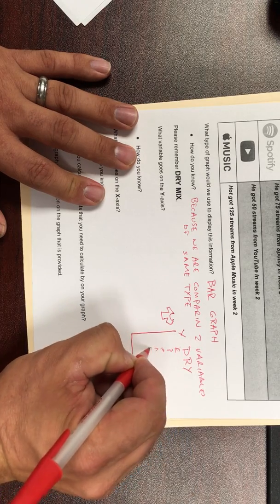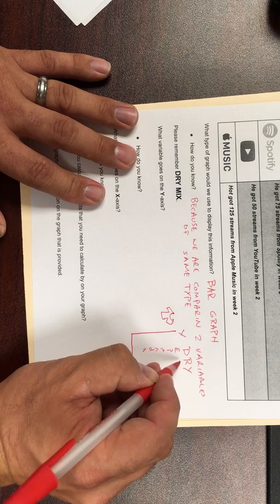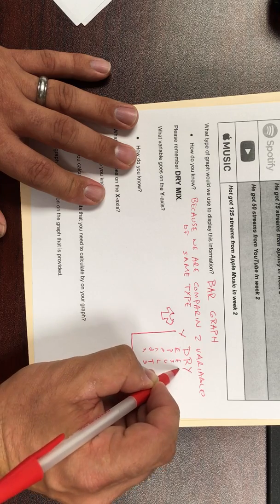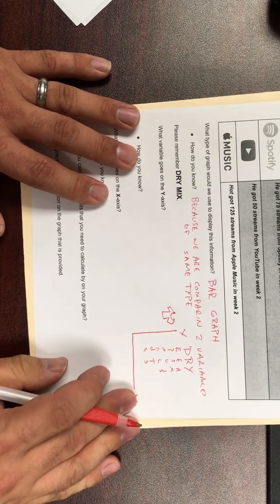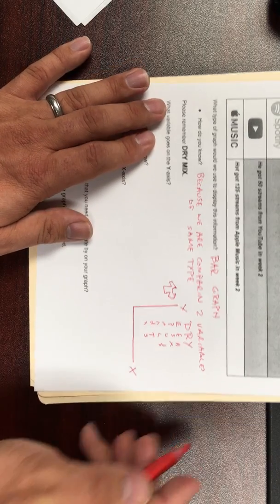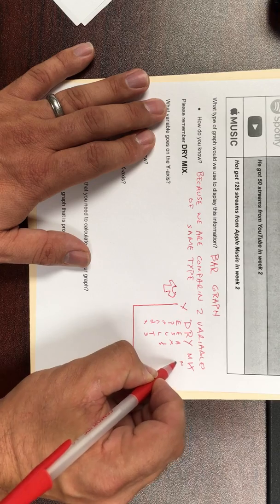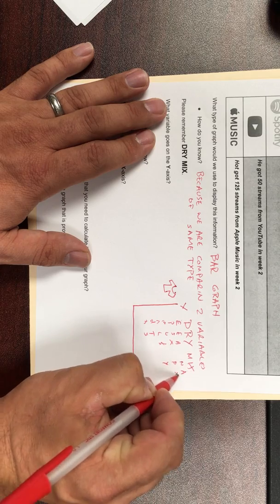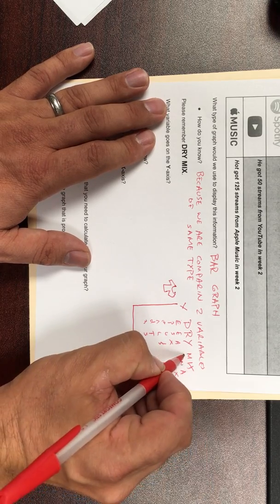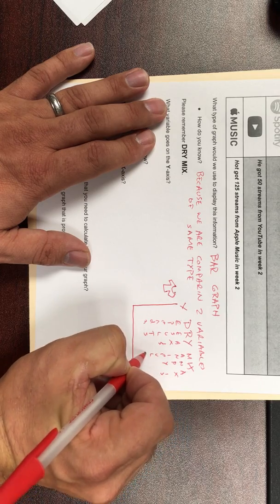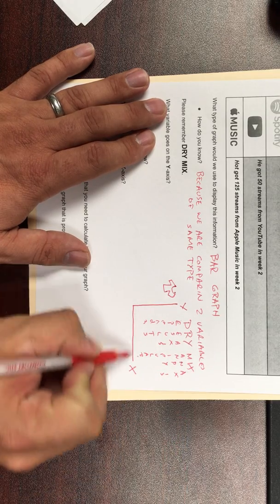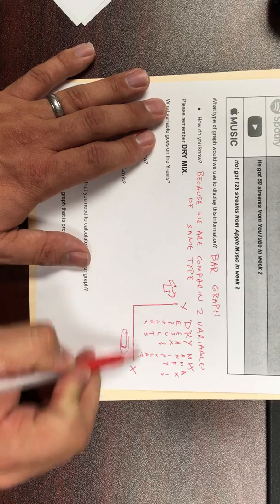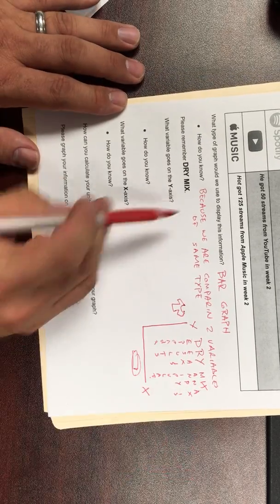So that's how I get the X and then Y for dry. Then let's come back to the dry mix. D, R, Y: dependent, R for results or responding, and Y axis. You might have learned different words for these, but that's the easiest way I remember it. And then mix: if you remember, independent or the one that I'm changing, and then X axis, also known as the one that you are manipulating.